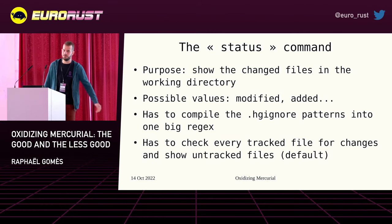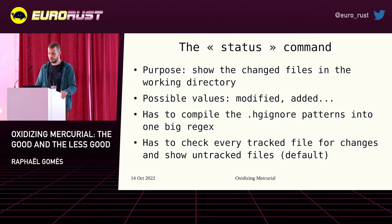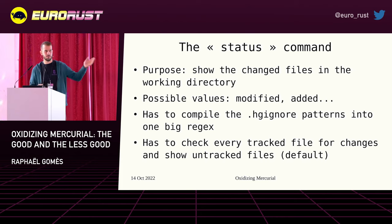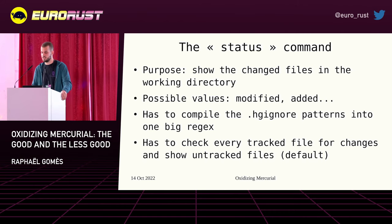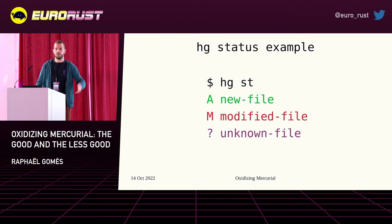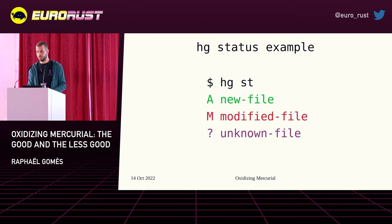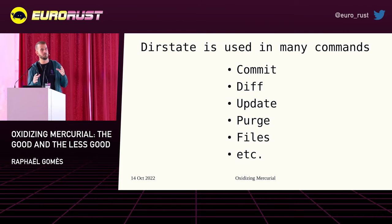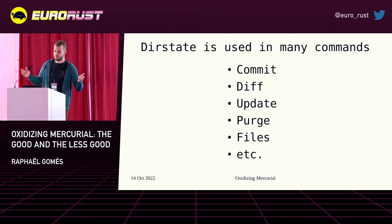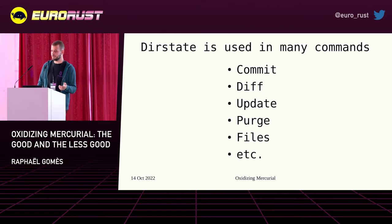The status command — you're probably familiar with it if you've used any version control system; Git has a similar command. Its purpose is to show what has changed since the last commit: what files are modified, added, removed, whatever. It needs to compile all of the ignore patterns from the config and the hgignore file into one big regular expression, and it has to check every tracked and untracked file. It makes use of a data structure called the dir state, which is integral to any command that interacts with the working copy within Mercurial: commit, diff, update, purge, files — all of those use the dir state in some capacity. It was apparent that this was one of the areas where Rust could really improve the performance story of Mercurial.